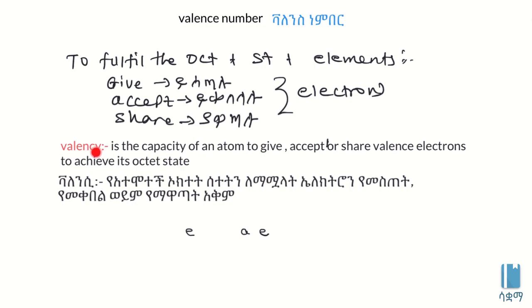Valence is the capacity of an atom to give, accept, or share valence electrons to achieve its octet state.